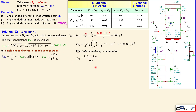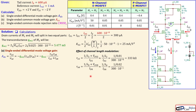The formula for ro2 approximates to 1/(λ2 · ID2). With λ2 = 0.01 and ID2 = 300 µA, ro2 = 333 kΩ. Similarly, ro8 = 1/(λ8 · ID8) = 1/(0.02 × 300 µA) = 167 kΩ. Substituting these into the gain expression gives a single-ended differential mode gain of approximately -608.